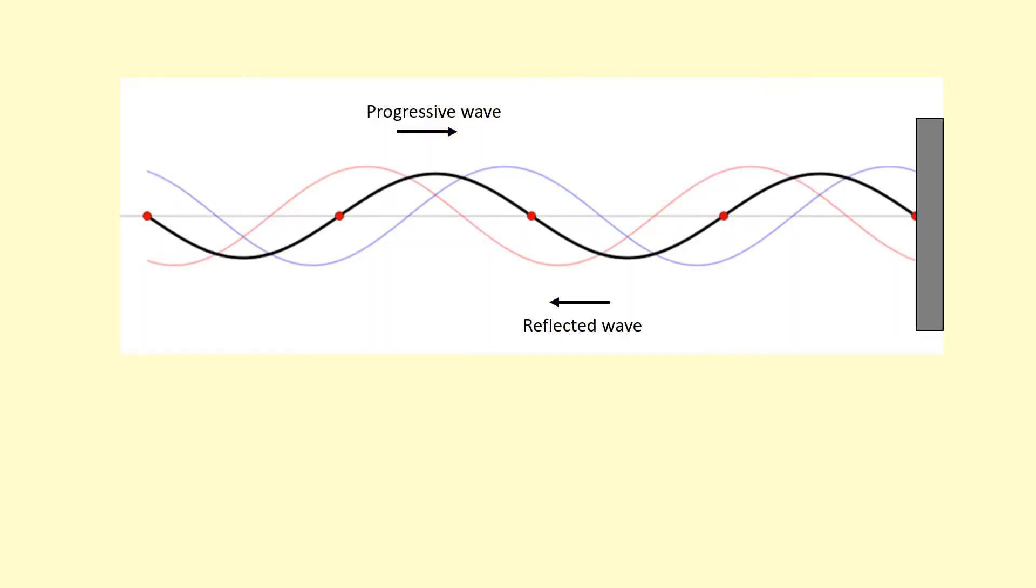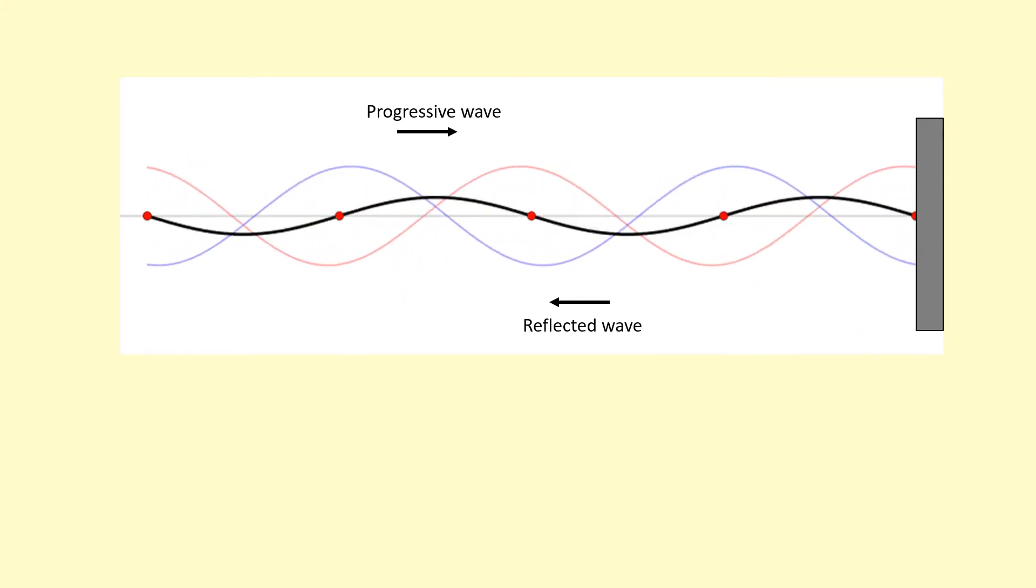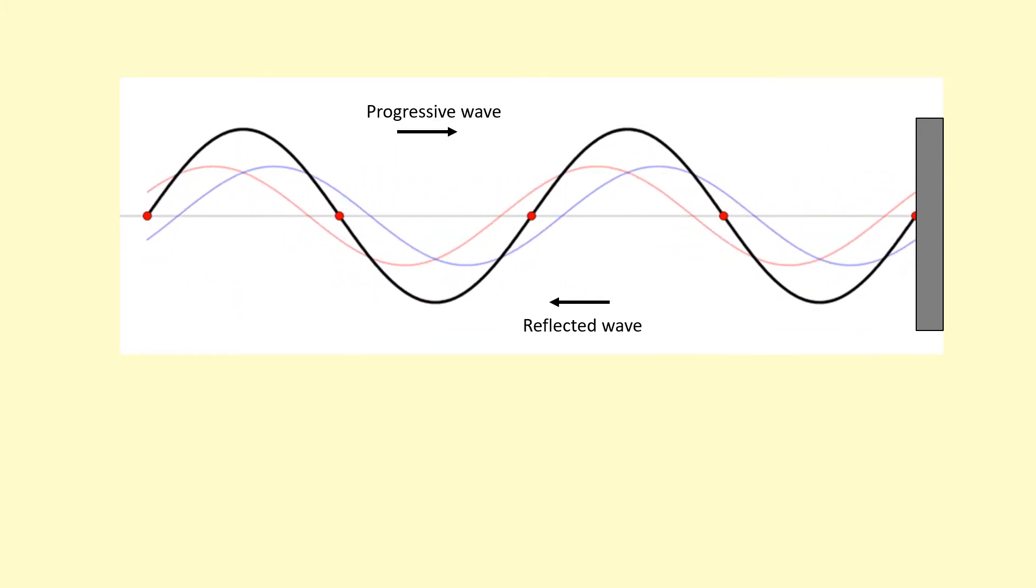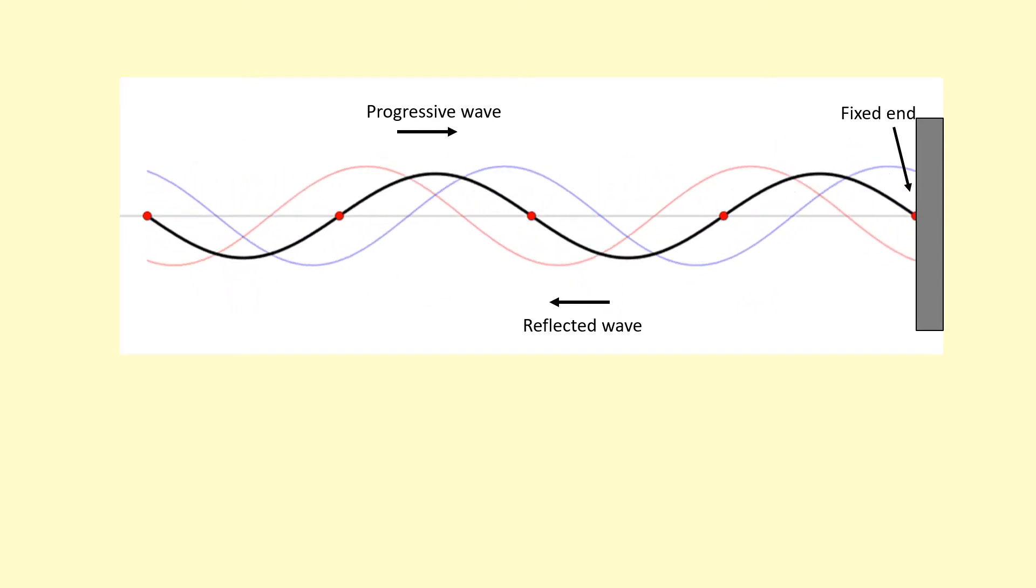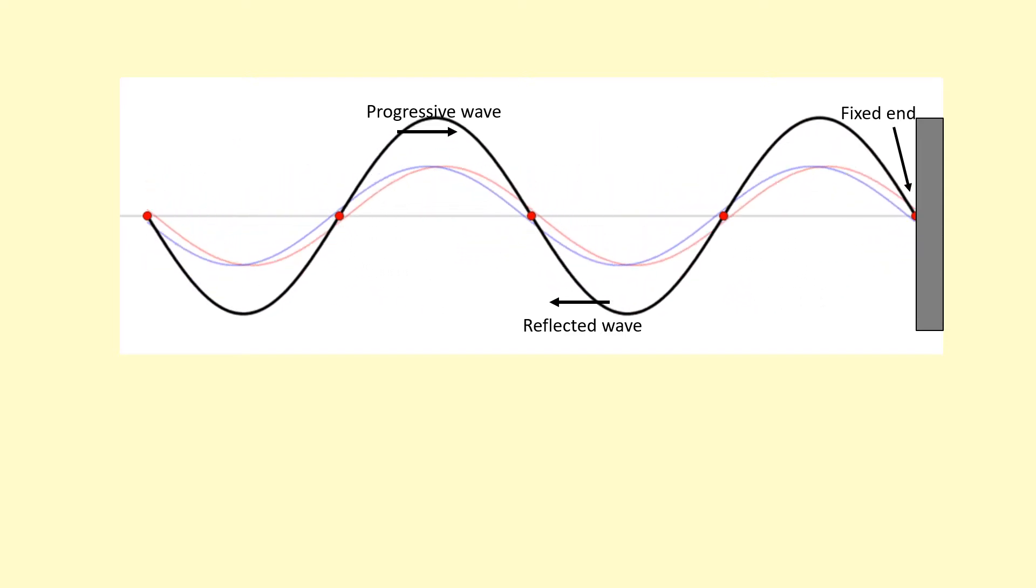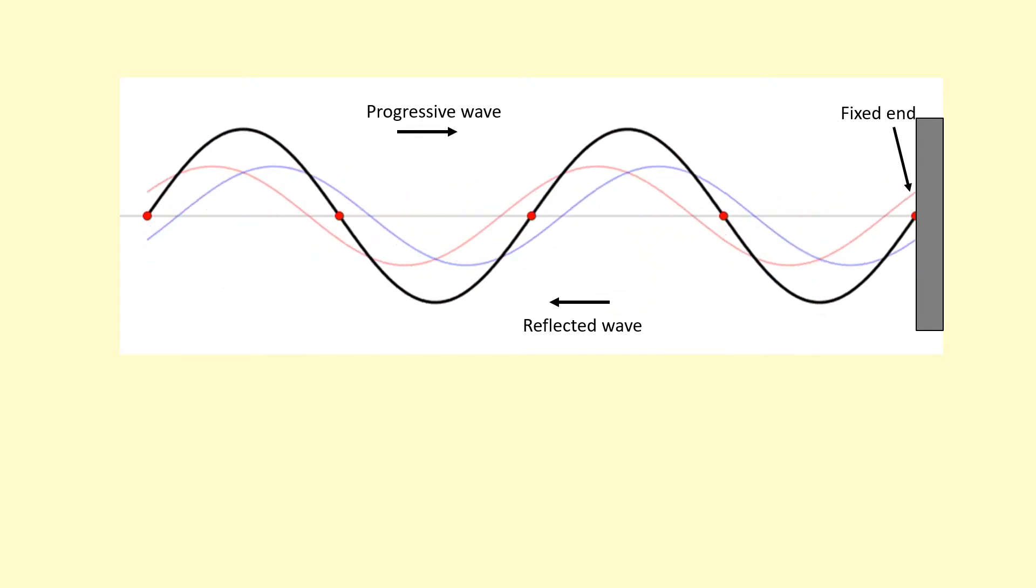And these two waves superpose. So for example here, you can see the wave in blue is going towards the right. And it's reflecting off some fixed point right there. And then it's going towards the left. In red, it shows a reflected wave. And when these two waves meet and they superpose, you can see the stationary wave that's formed in black.